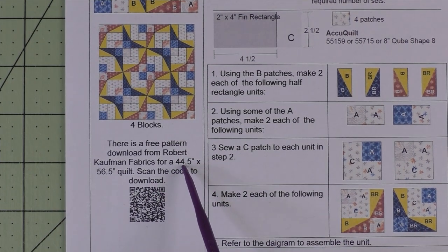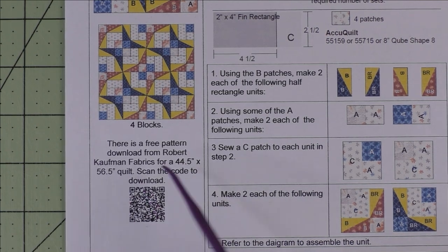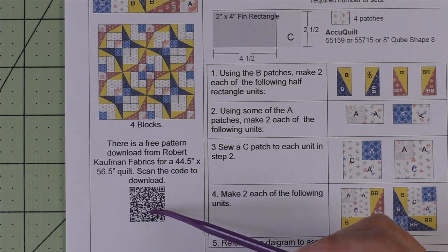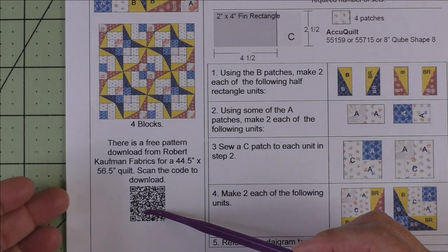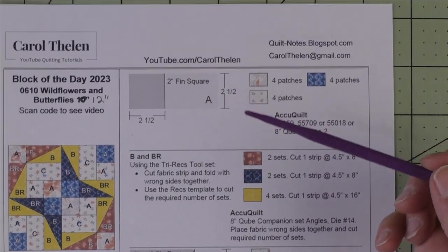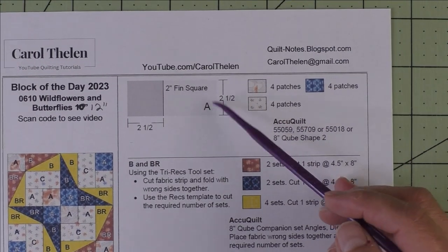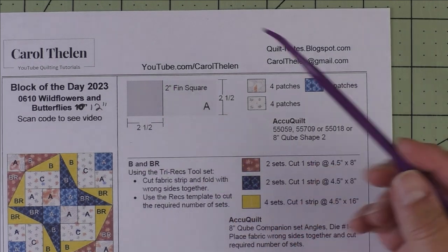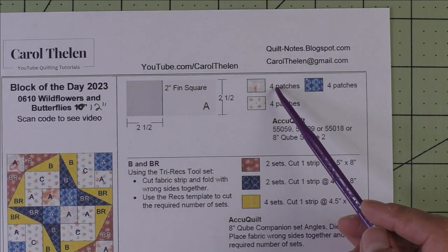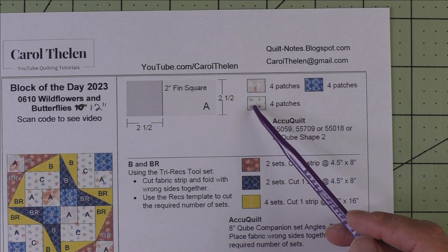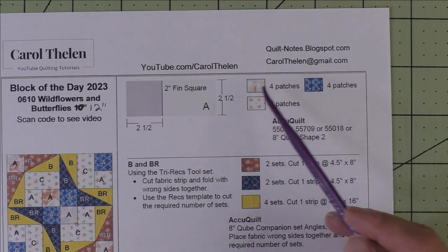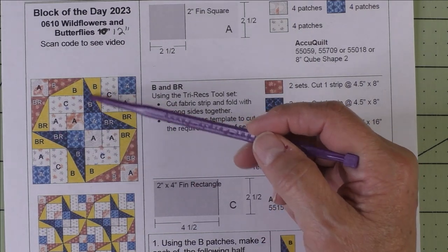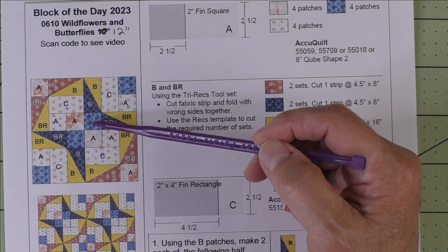This is a free pattern download from Robert Kaufman Fabrics. The pattern makes a 44.5 inch by 56.5 inch quilt. If you scan this code you can download the pattern from their website. There are three patches. Patch A is a 2 inch finished square — cut 2.5 inch squares. You'll need four patches each of the background and the two light butterfly fabrics.